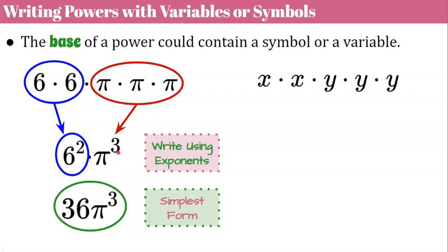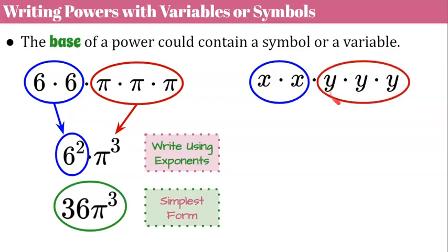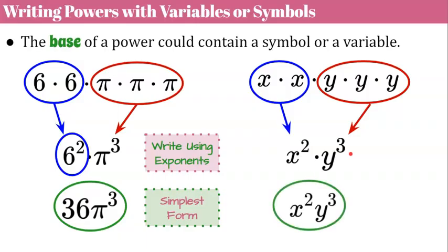We could write it using exponents or simplify it — pay attention to what the directions ask. For our second expression, x times x times y times y times y: we have x being multiplied twice and three y's. So we write x squared times y cubed. This is in simplest form — there's an invisible multiplication sign between them, but we don't need that multiplication dot.